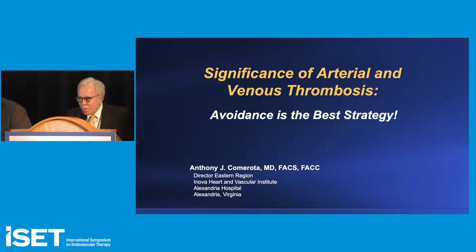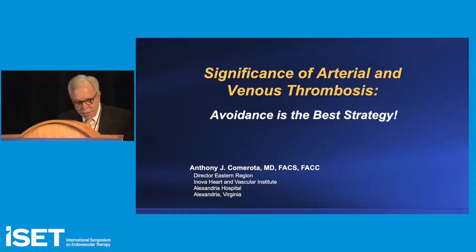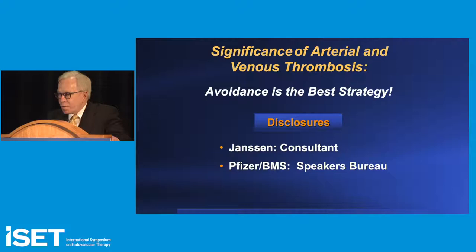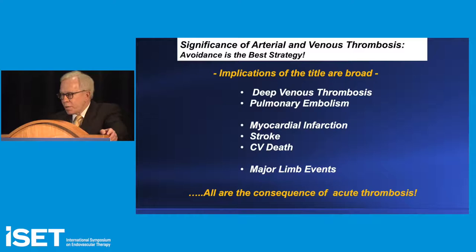Thank you. It's a real privilege to be here with this esteemed faculty. My job is to address arterial and venous thrombosis. There are major implications for this topic, including deep venous thrombosis, pulmonary embolism, MI, stroke, cardiovascular death, and major limb events — all consequences of acute thrombosis.